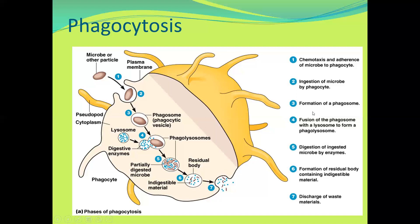So looking at these points: the first is identification of the pathogen and sticking of the pathogen to the membrane of the phagocyte. The second step is ingestion of the microbe by the phagocyte. The third is the formation of the phagosome. The fourth is the fusion of the phagosome with lysosomes, which contain digestive enzymes. The fifth is that those enzymes digest the microbe or pathogen. The sixth is that indigestible parts lead to formation of a residual body. And the seventh is that the phagocyte removes the residual body by the process called exocytosis.